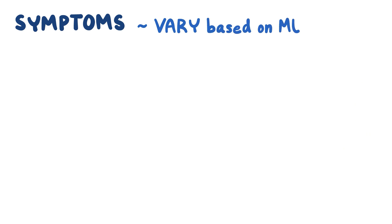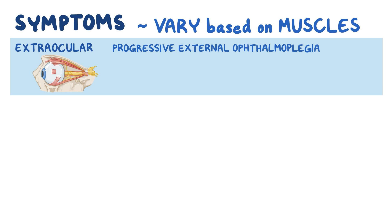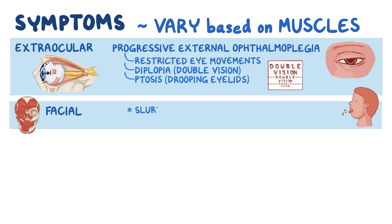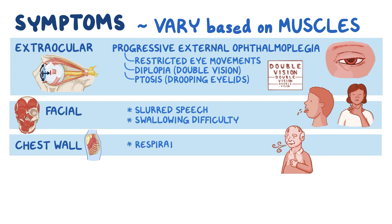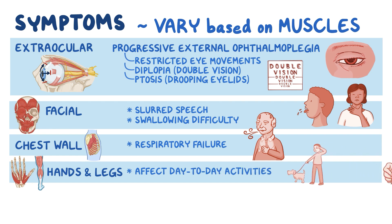Symptoms vary based on the group of muscles affected. In most individuals, the first to be affected are the extraocular muscles which control eye movements, resulting in progressive external ophthalmoplegia. Symptoms include restricted eye movements, diplopia or double vision, and ptosis or drooping of eyelids. Facial muscle involvement can cause slurred speech and swallowing difficulty. Involvement of chest wall muscles results in respiratory failure, and involvement of muscles in the hands and legs can affect day-to-day activities like walking, eating, and writing.